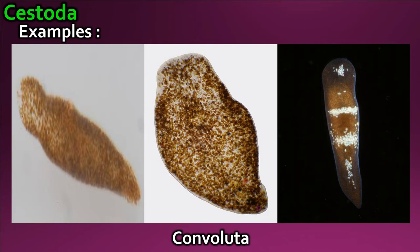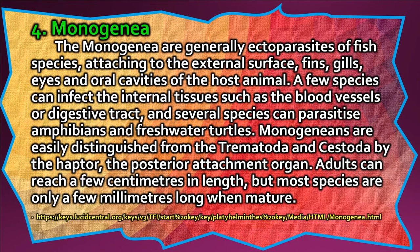Monogenea are generally ectoparasites of fish species, attaching to the external surface, fins, gills, eyes, and oral cavities of the host animal. A few species can infect internal tissues such as blood vessels or the digestive tract, and several species can parasitize amphibians and freshwater turtles. Monogeneans are easily distinguished from the Trematoda and Cestoda by the hapteron, the posterior attachment organ. Adults can reach a few centimeters in length, but most species are only a few millimeters long when mature.